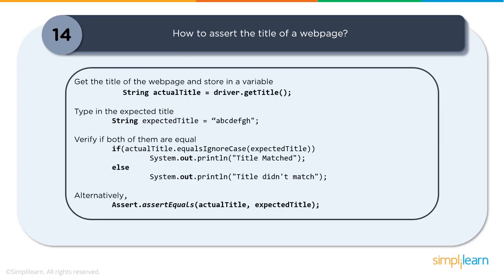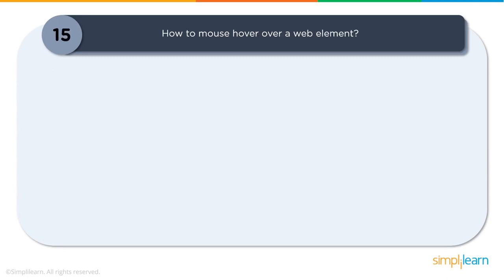Question fourteen: How to assert the title of a web page? WebDriver provides a method called getTitle() which fetches the title of the current page as a string. Store the returned value in a string variable as 'actual title'. You can then verify it using either an if-else statement comparing actual with expected title, or using assert statements provided by Selenium to validate whether the page title matches expectations.